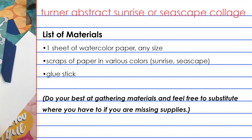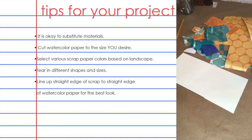During our studio time together, we will be making Turner abstract sunrise or seascape collages. The list of materials is simple: one sheet of watercolor paper in any size, scraps of paper in various colors — for a sunrise, go for colors that remind you of a sunrise; for a seascape, pick colors more reflective of the sea. Finally, you'll need a glue stick. Do your best at gathering materials and feel free to substitute where you have to.